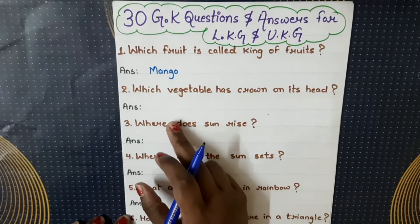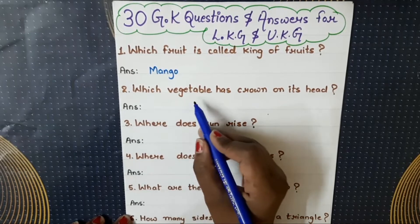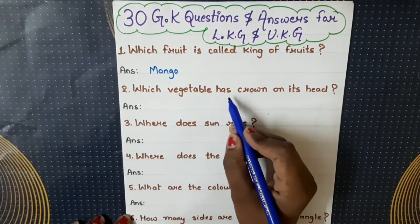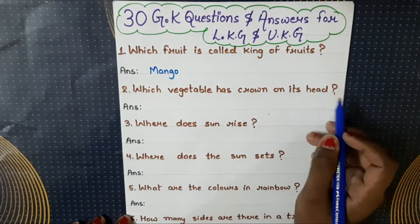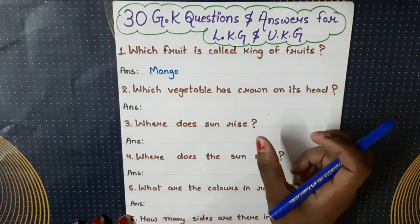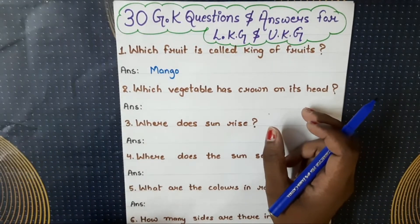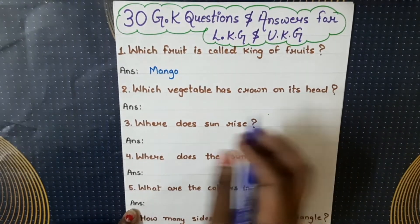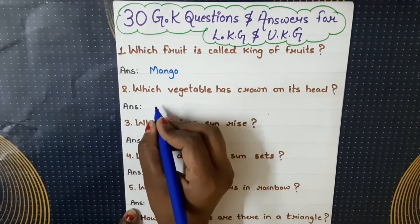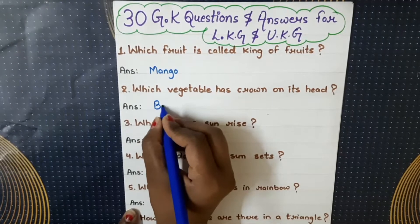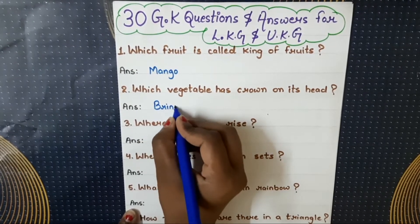Our next question is: which vegetable has a crown on its head? Koun sa vegetable hai jis ke head pe crown hota hai? So the answer is brinjal.